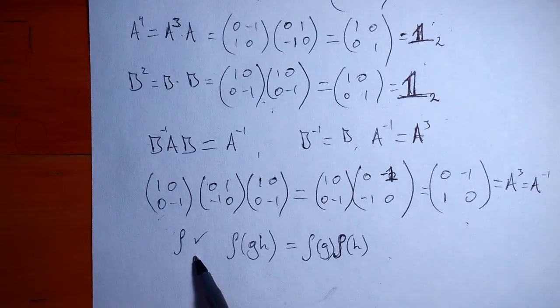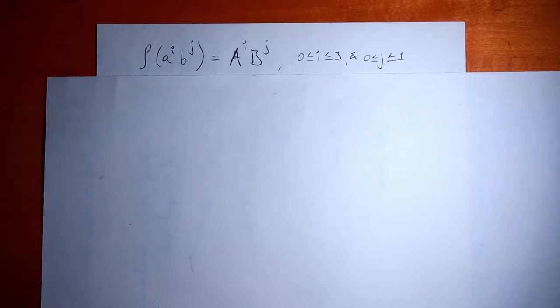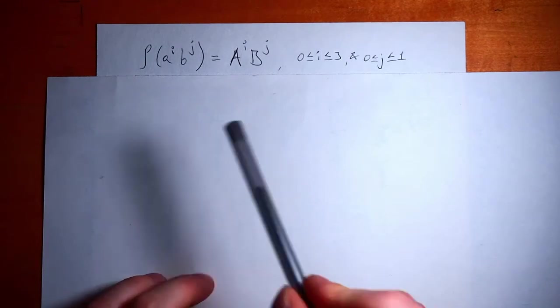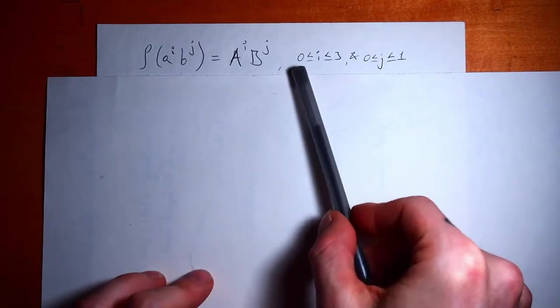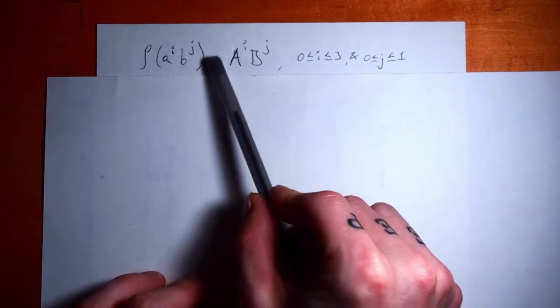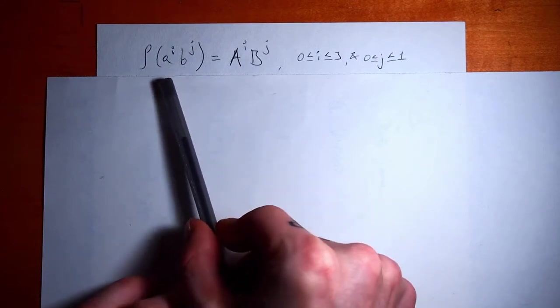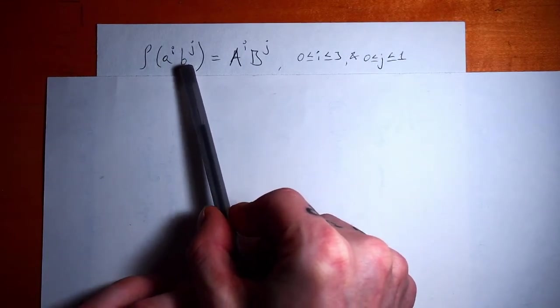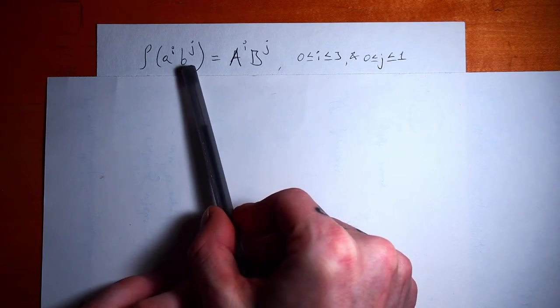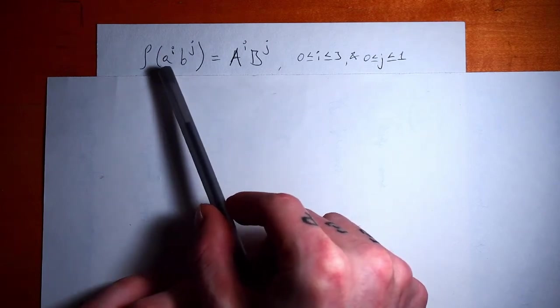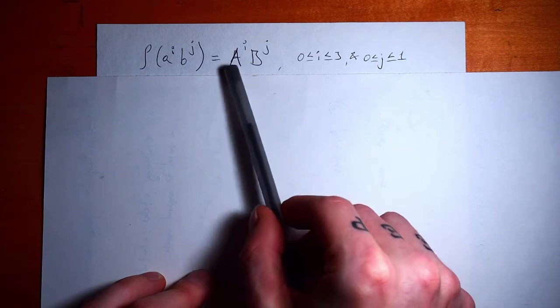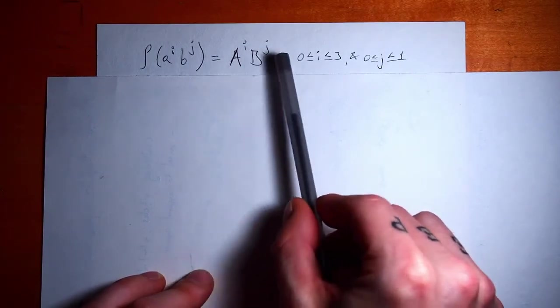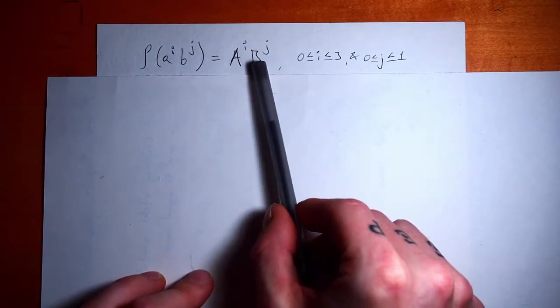And we found that this is our homomorphism. Just kidding. So the real homomorphism, the full map, is of this form. Any element of D8 can be written as a product of those two generators: some power of A times some power of B. We'll see all of those in just a second. And all that that map does is spit out powers of A and B, but now they're the matrix A and the matrix B that we saw earlier.